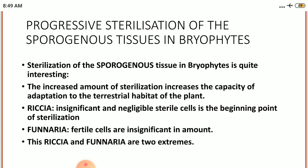So to conclude, the increased amount of sterilization increases the capacity of adaptation to the terrestrial habitat of the plants. In brief, Riccia with insignificant and negligible sterile cells is the beginning point of sterilization, which culminates into Funaria where fertile cells are insignificant in amount. Thus we can say Riccia and Funaria are the two extreme examples.